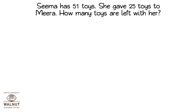Seema has 51 toys. She gave 25 toys to Meera. How many toys are left with her? What do we have to do here? We have to find out how many toys she has left. From 51 toys, she has given away 25 toys. We have to do 51 minus 25. First, we write the problem properly in tens and units form.